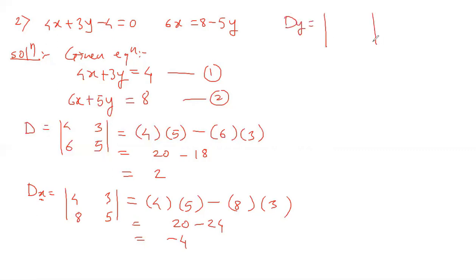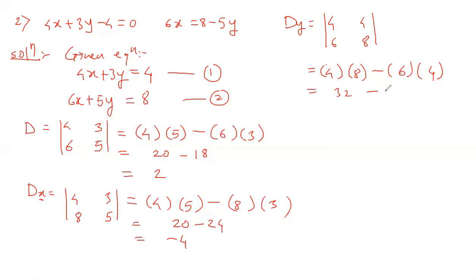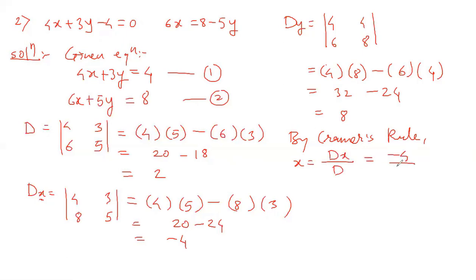Now we find Dy. Instead of y coefficients, we write the constants 4 and 8, while x coefficients 4 and 6 remain as they are. Cross multiplying: 4 times 8 is 32, minus 6 times 4 is 24. So 32 minus 24 equals 8. By Cramer's rule, x equals Dx over D: minus 4 divided by 2 equals minus 2. And y equals Dy over D: 8 divided by 2 equals 4.